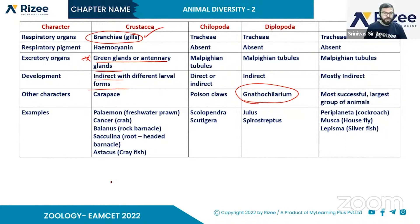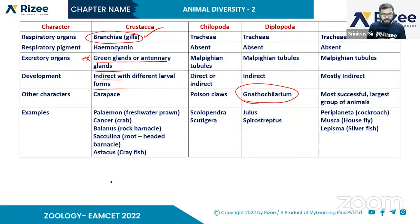Examples in Diplopoda are also noted. Examples in insects (Hexapoda) include: Periplaneta (cockroach), mosquito, housefly, and Lepisma. Lepisma is a very important example — it is commonly known as silverfish.